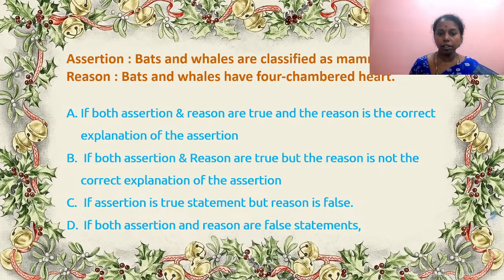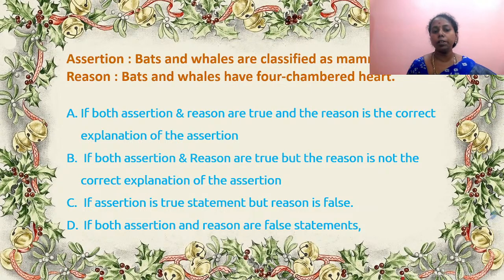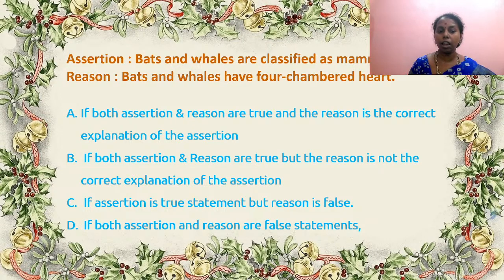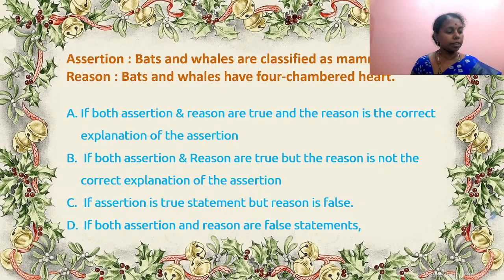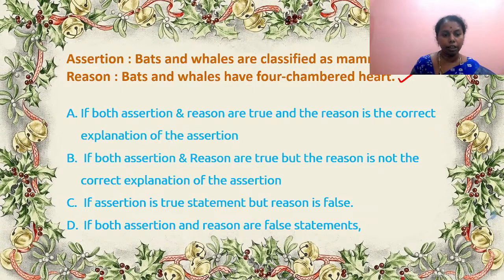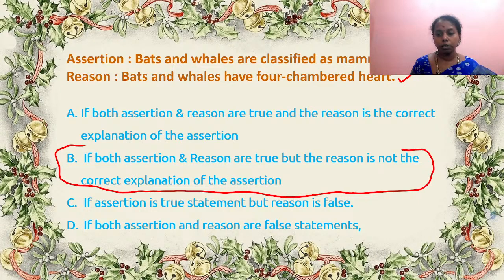Assertion: bats and whales are classified as mammals. Reason: bats and whales have four-chambered hearts. Both are correct statements — bats and whales are mammals and they do have four-chambered hearts. But if the reason had mentioned mammary glands, we could go with A. Since mammary glands are not mentioned, it is not the correct explanation. Answer is B.